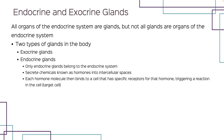We're going to start with endocrine. All organs of the endocrine system are going to be glands, but not all glands are organs. Two types of glands in the body are your endocrine glands, which belong to the system. Exocrine glands secrete their products into ducts that empty into a surface or cavity. Endocrine glands, on the other hand, are ductless glands that secrete chemicals known as hormones into our intracellular spaces. The hormones diffuse directly into the blood and are carried throughout the body. Each hormone molecule may bind to a cell that has a specific receptor for that hormone, triggering a reaction within that cell. Such cells are known as our target cells.